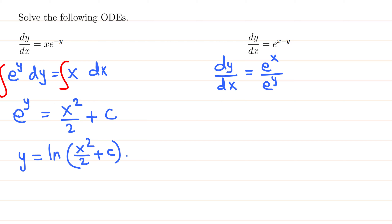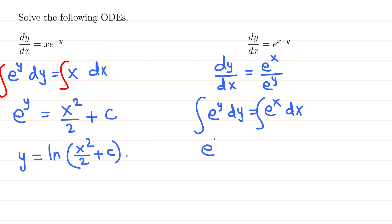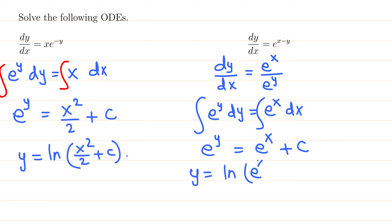Now we separate the variables — move e^y to the left side: e^y dy equals e^x dx, kind of cross multiplying. Integrating both sides: e^y equals e^x plus c. Taking ln of both sides gives y equals ln(e^x plus c). Do not try to simplify further — that is the final answer.